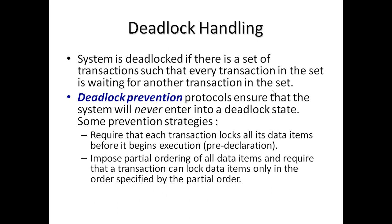After a deadlock occurs, we can prevent or avoid it. Deadlock prevention: a deadlock prevention protocol ensures that the system will never enter a deadlock state. Some prevention strategies require that each transaction locks all data items before it begins execution — when a transaction wants to access a data item, it first requests the concurrency control manager, holds the lock, and when it completes execution it unlocks the data item. A second condition imposes a partial ordering of all data items and requires that a transaction can lock data items only in the order specified by that partial order.